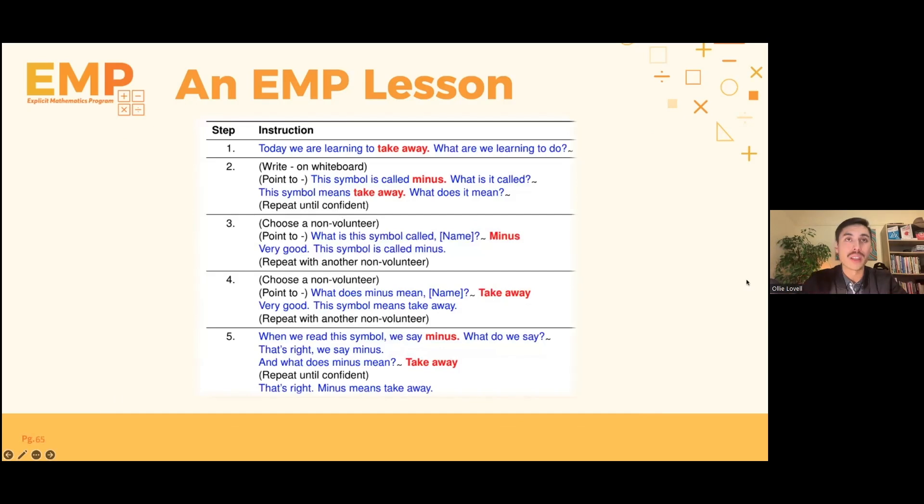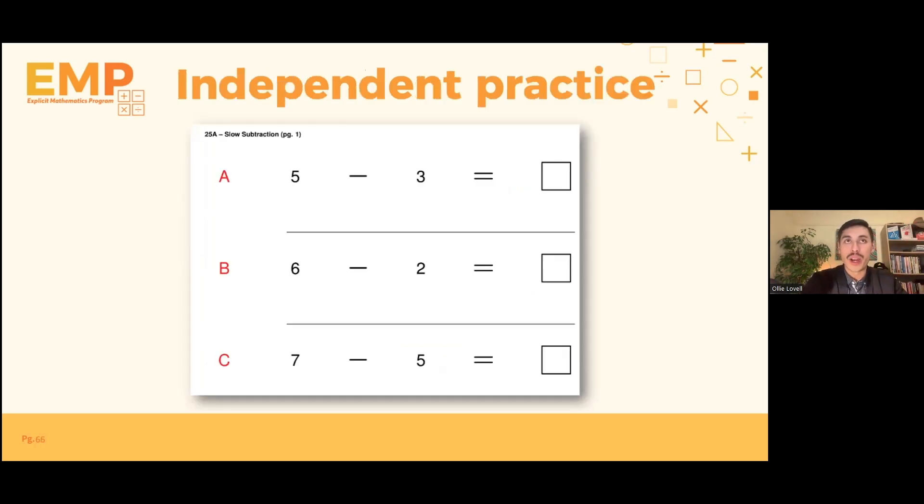Well, this is what this particular lesson looked like. So Tony was actually using a script, which is part of the EMP program. She was reading from it in the blue and the students were saying the red parts. So this is one of the lesson examples. I'll talk about a few of the other less scripted parts of the program in a moment. And then following this, students then went on to independent practice. So this is actually a sample of some of the large amount of independent practice that they then went on to following this particular lesson.